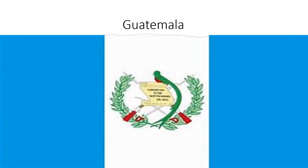Guatemala: light blue and white and light blue next to each other, and there is a bird that is above a paper in the middle, and there are two leaves together.